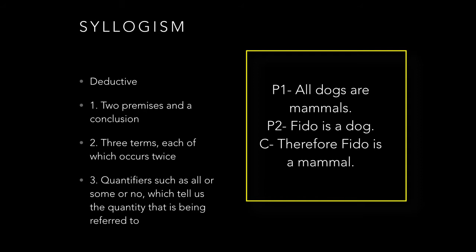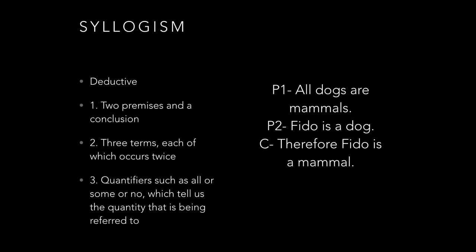Premise one: all dogs are mammals. Premise two: Fido is a dog. Therefore, Fido is a mammal. If the conclusion can logically follow from the two premises, then we say that this argument is valid. That's the big thing about arguments - we need to make sure that we understand that they are valid.